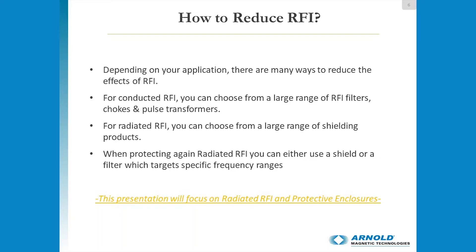For radiated RFI, you can choose from a large range of shielding products. And when protecting against radiated RFI, you can either use a shield or a filter, which will target specific frequency ranges. Now for what we're looking at today, we're going to be specifically looking at shielding and absorbing materials — enclosures that you would have around your electronic system that you are trying to protect from either signals coming in, or to protect from your signals going out that would interfere with other devices.